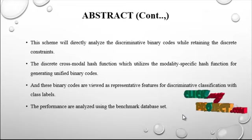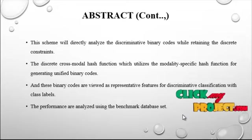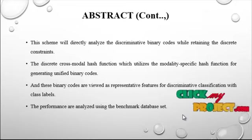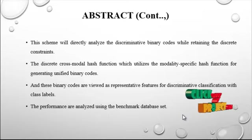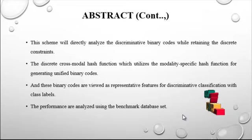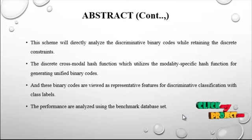In order to overcome these limitations, a novel cross-modal hashing is proposed for the image retrieval process. The scheme directly analyzes discriminative binary codes while retaining the discrete constraints. The discrete constraints cross-modal hash function utilizes a modality-specific hash function for generating unified binary codes, which are viewed as representative features for discriminative classifications with per-class labels. Performance is analyzed using the database set.